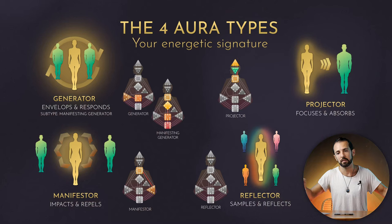Finally, the aura of the reflector, which is only one percent of the population. This is a very open aura that samples the environment. If you see one reflector in a group of a hundred people, that reflector is going to be a great representation of the state of health and all the characteristics of the environment around them. These four types each have a strategy — the way you're going to go through life.